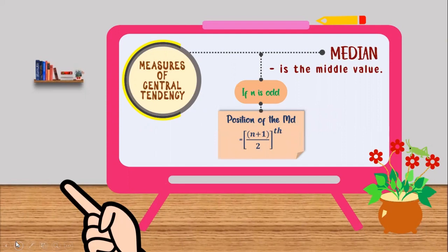Now solving for the median, if n is odd, we use the formula position of the median is equal to the quantity of n plus 1 over 2. This formula does not tell us the median value, but rather it tells us the position of the median. That is why we have here the th.